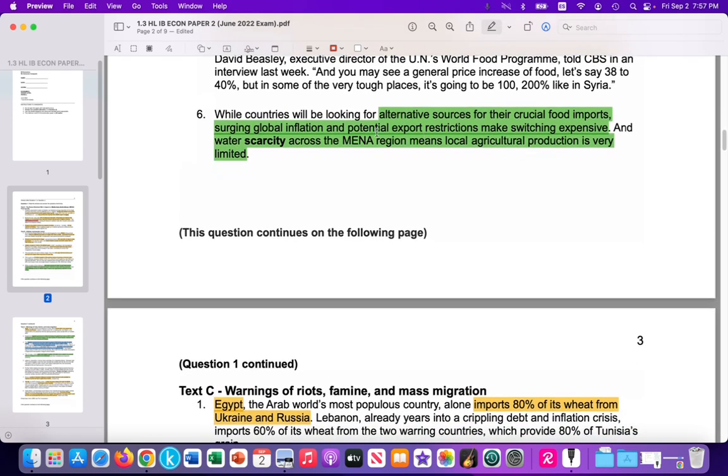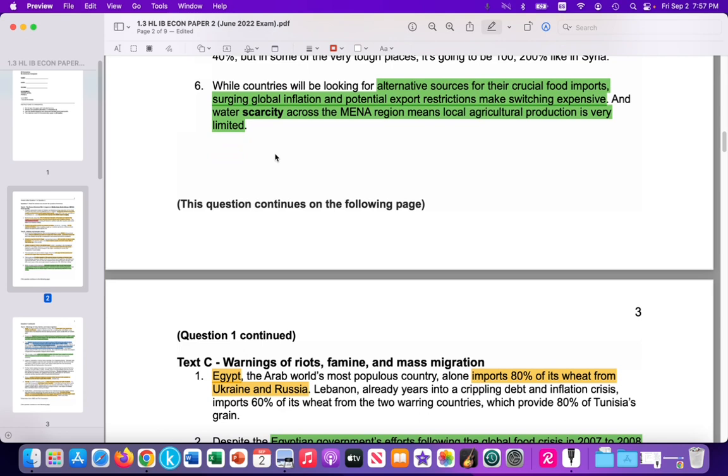What about solutions? What solutions can these countries pursue? Well, perhaps looking for alternatives. But the article highlights that alternative sources for crucial food imports is difficult when the food prices are rising. How can countries import alternatives when those prices are also rising? And what about producing your own food? Well, in the region, Middle East, North Africa, water is scarce. We're talking about desert type of climate, maybe experiencing less than 10 inches of rain per year. So that is a limitation to being able to grow food locally.